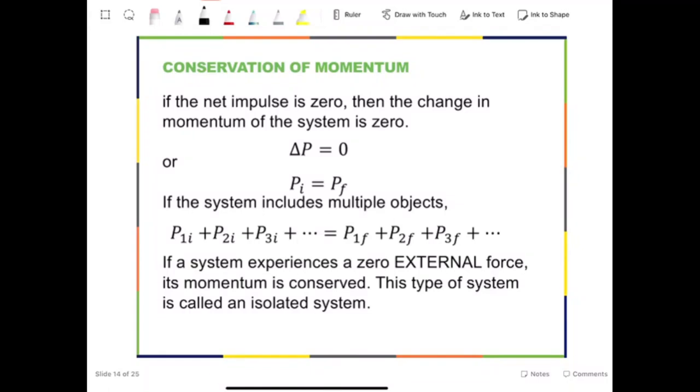We have learned that net impulse on an object or a system is equal to the change in momentum of the object or the system.